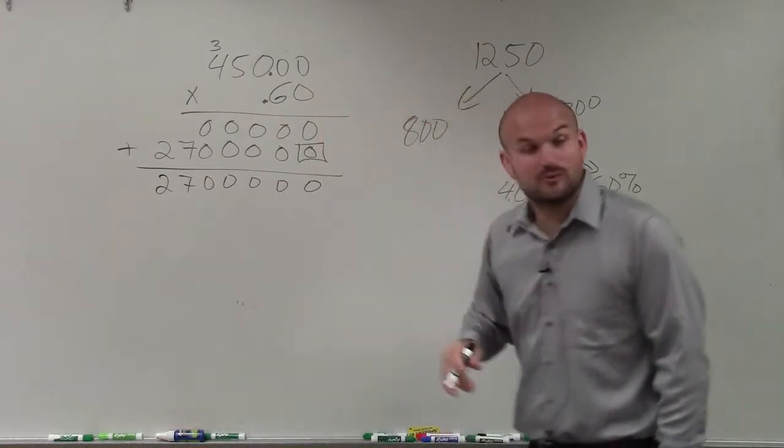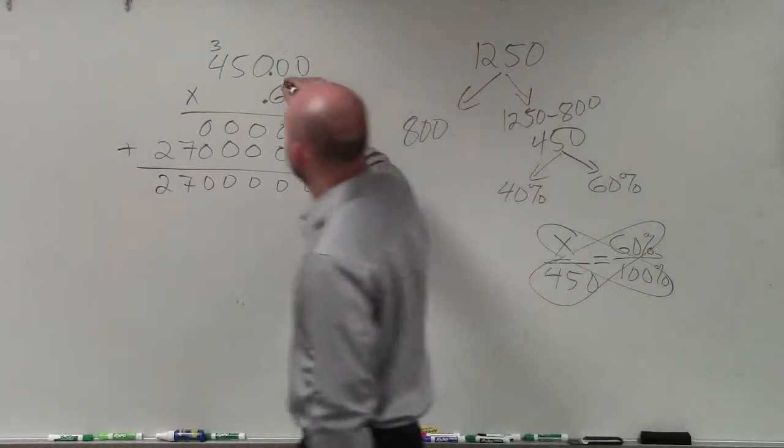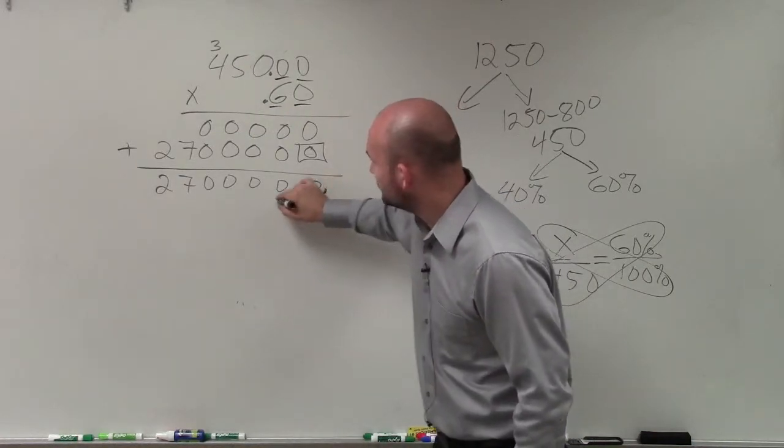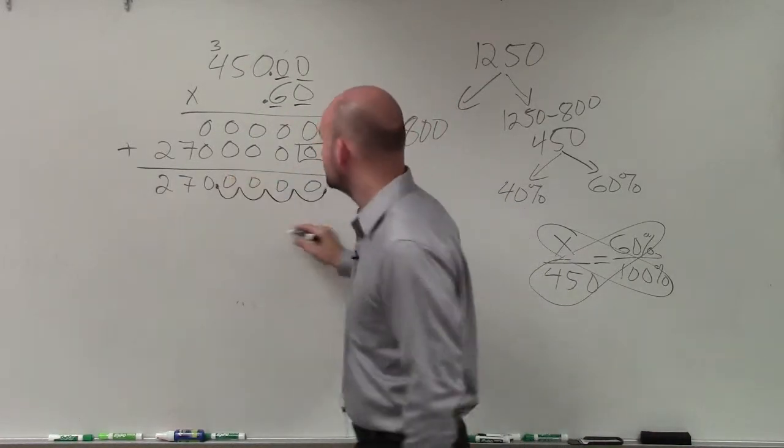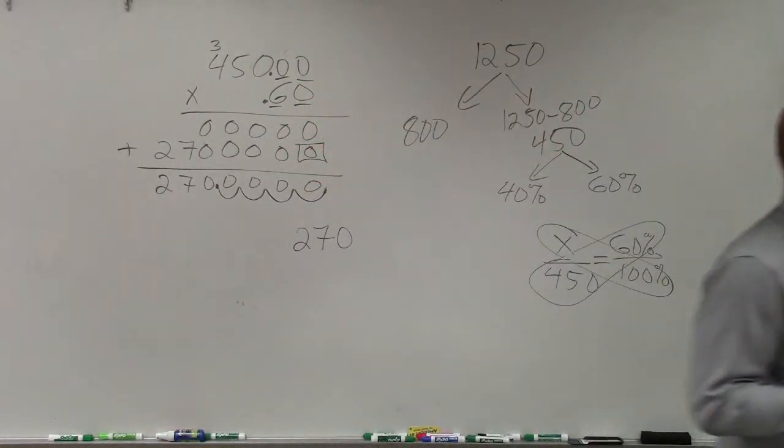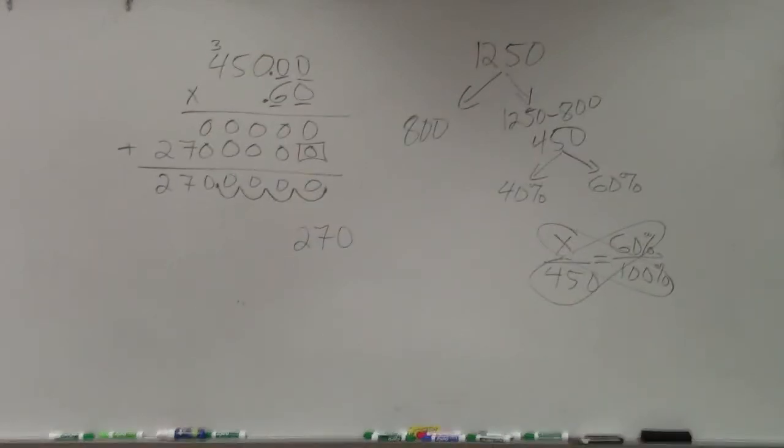Now, to determine where the decimal point is, I count how many placeholders I have, which is 4. So I start at the end. I go 1, 2, 3, 4. So my final answer is 270. Obviously, with the calculator, it'd be much quicker and easier. But I want you guys to understand, yes, you could.